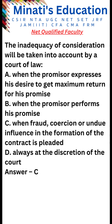The answer is c — when fraud, coercion, or undue influence in the formation of the contract is pleaded. Inadequacy of consideration is not a ground for setting aside a contract on its own. However, it may be taken into account by the court as evidence that the promiser's consent was not freely given, if fraud, coercion, or undue influence is pleaded.